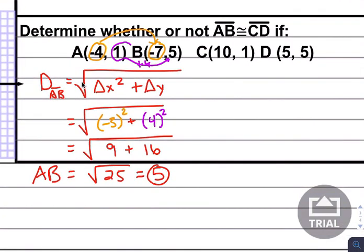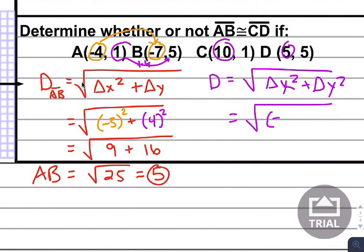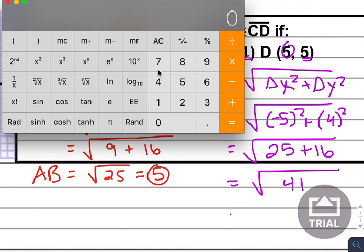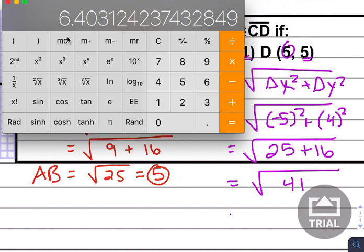Now to tell if this is congruent to CD, we're going to have to find the distance of CD. I'm going to use the distance formula again - that worked the first time. I like it. So let's do it again. So change in x squared plus change in y squared. So the change in x goes from 10 to 5. That's going to be down 5. So let's go negative 5 squared. And then we have CD. We have 1 going up to 5. That's a change of 4. So that's going to be 4 squared. And so if we look at negative 5 squared, that's going to be 25. 4 squared is going to be 16. 25 and 16 make 41. And if we take 41 and square root it, we're going to get about 6.40.